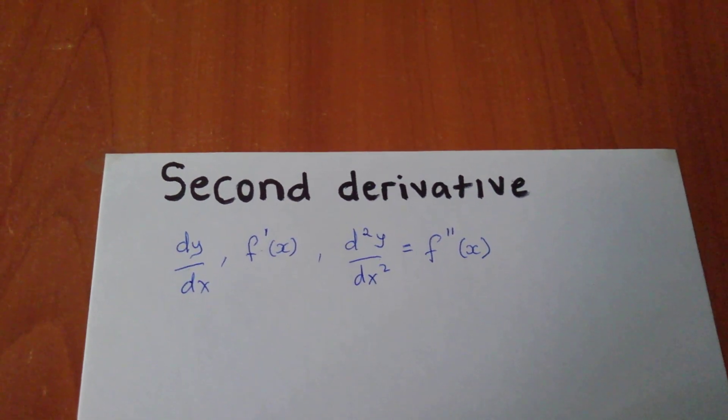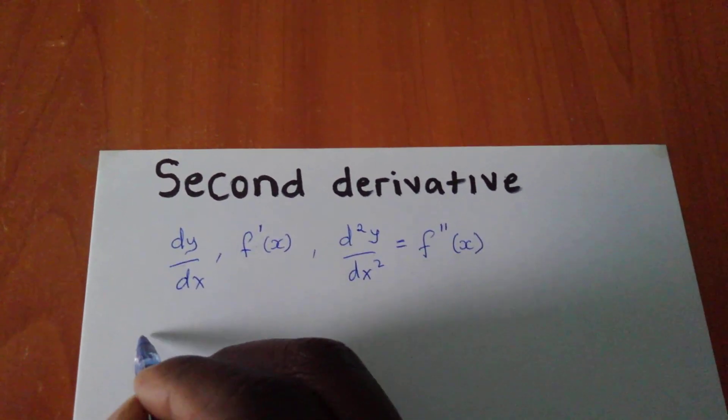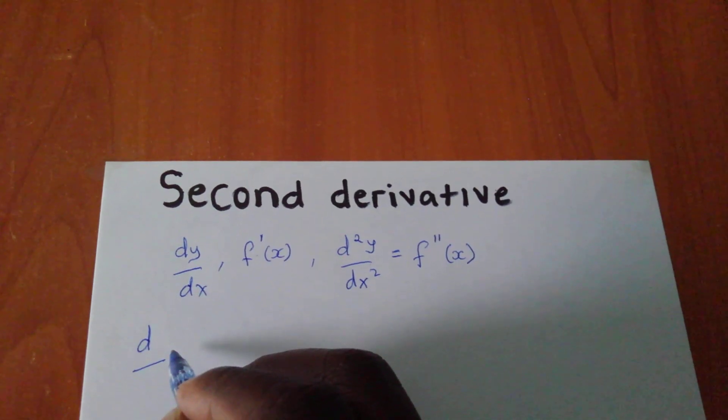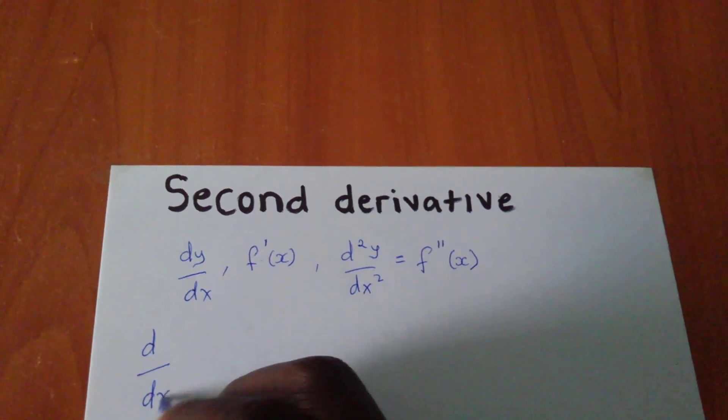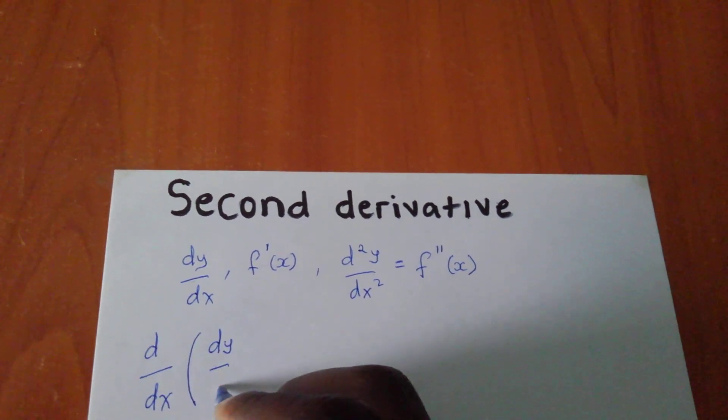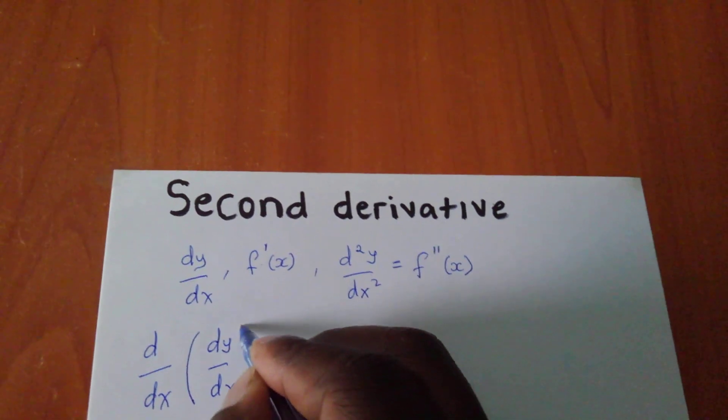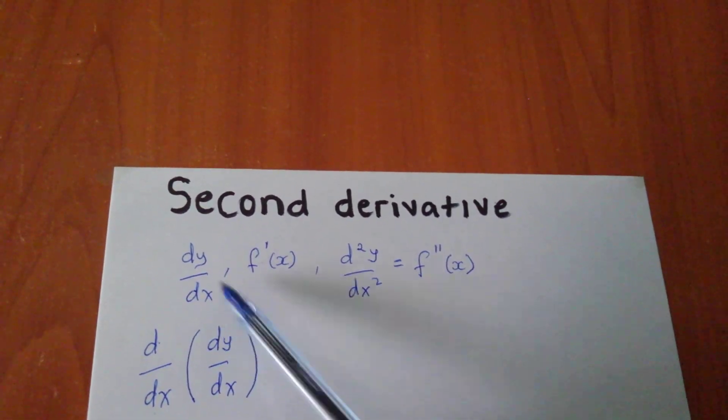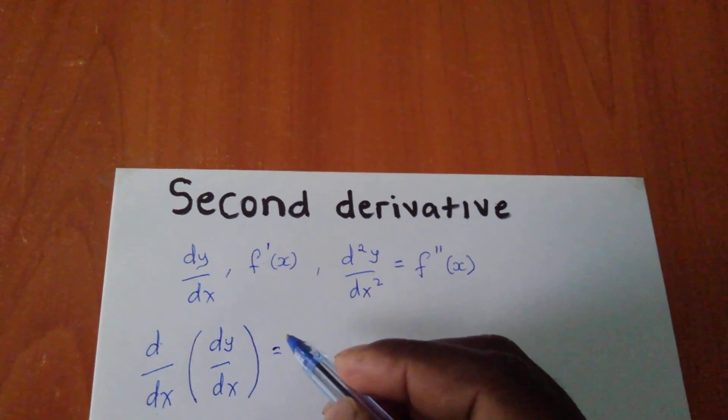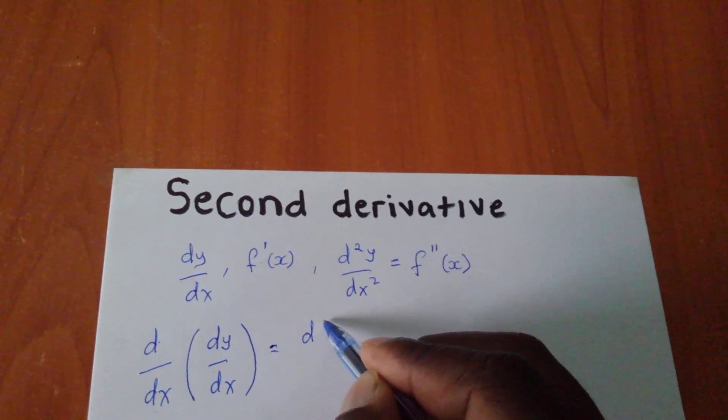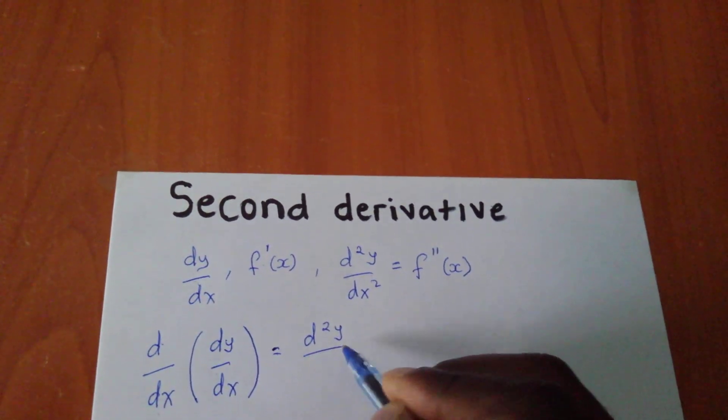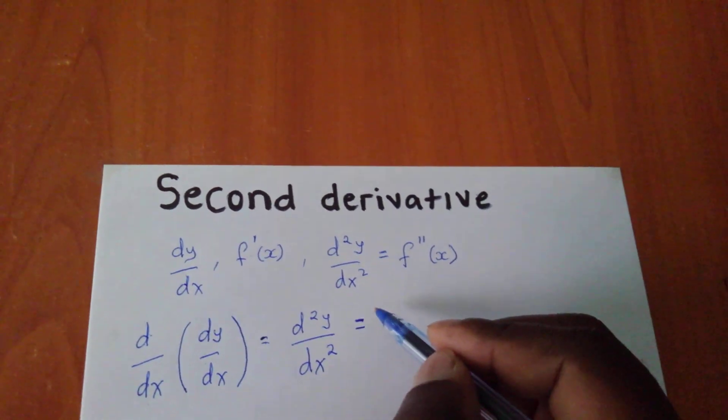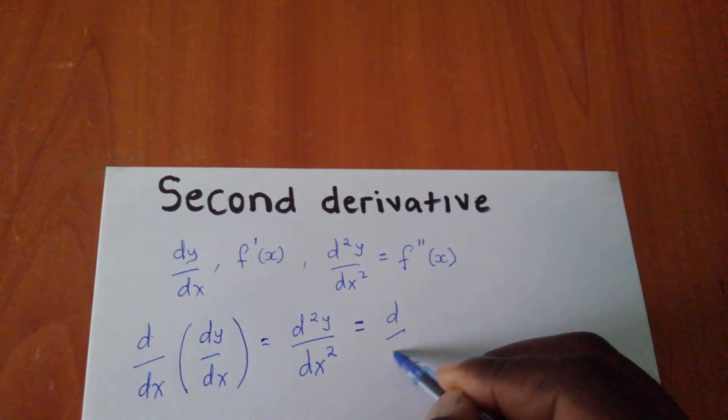Now, from the formula, the general formula which I have here, which says d/dx of (dy/dx). This simply means that if you differentiate what you first differentiated as your first derivative, you must be able to get the second derivative, which is denoted as d²y/dx². And this is the same as differentiating with respect to t